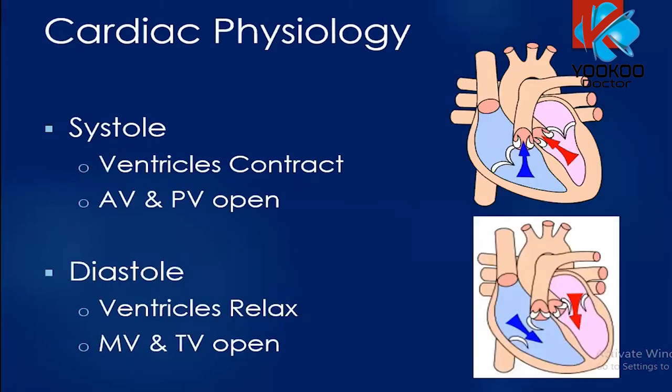Brief notes on cardiac physiology: the cardiac cycle has a systolic phase and a diastolic phase. During systole, the ventricles contract and the aortic and pulmonic valves open. During diastole, the ventricles relax and the mitral valve and tricuspid valve open.